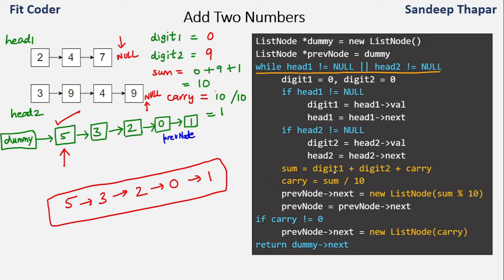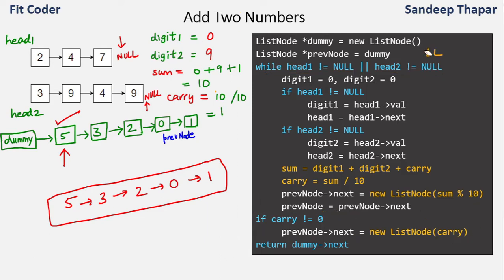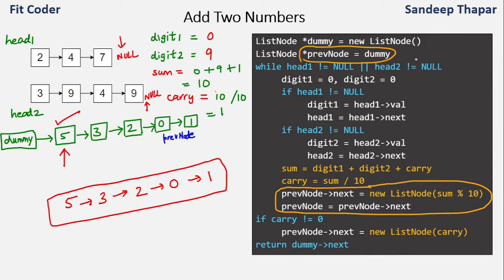The only tricky parts are the carry computation and the final if statement after the while loop — if there is any remaining carry we need to create a new node. We initialize the previous node with the dummy node; the advantage is that we do not need to write edge cases for when previous is null. If previous were null, you couldn't do previous.next and you'd need extra if-else conditions. The dummy node avoids those null edge cases and makes the code much cleaner.